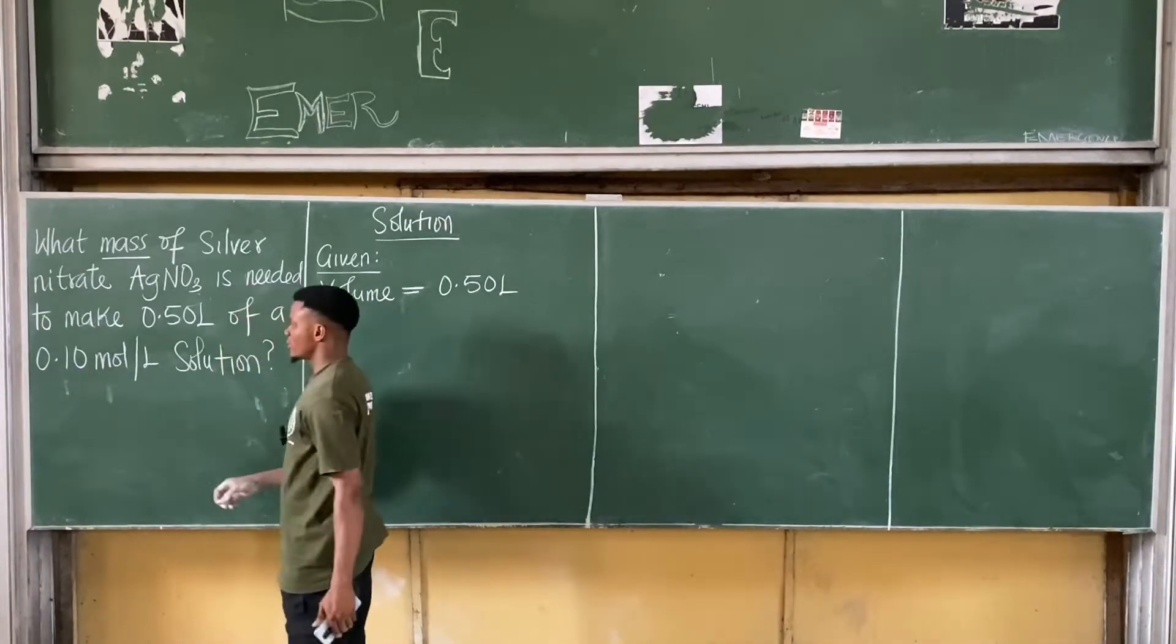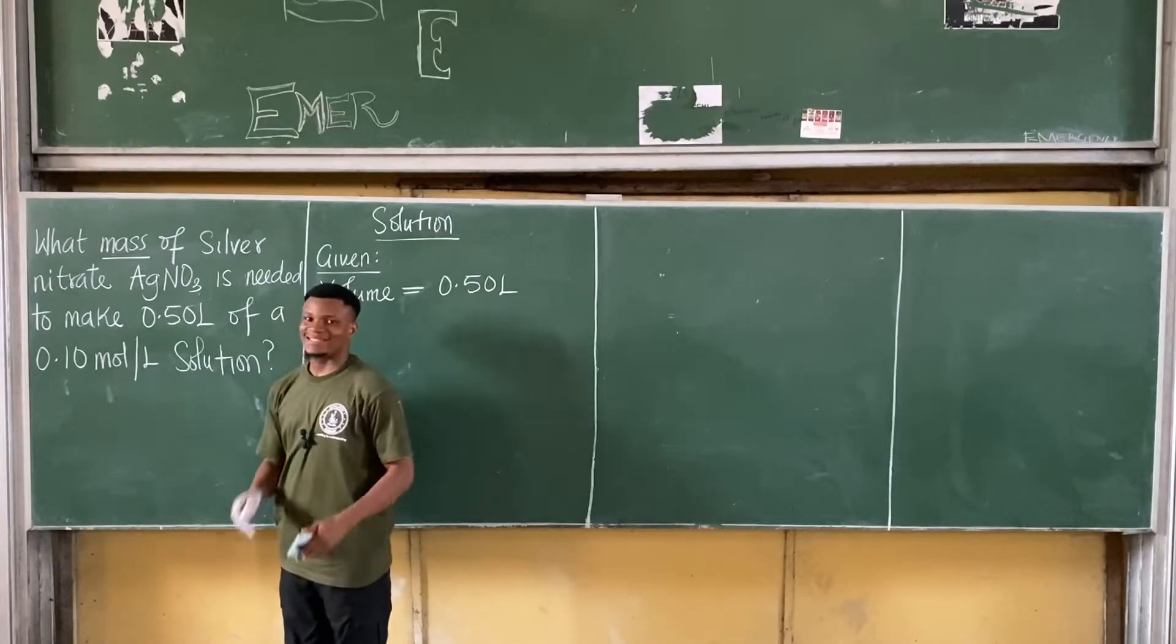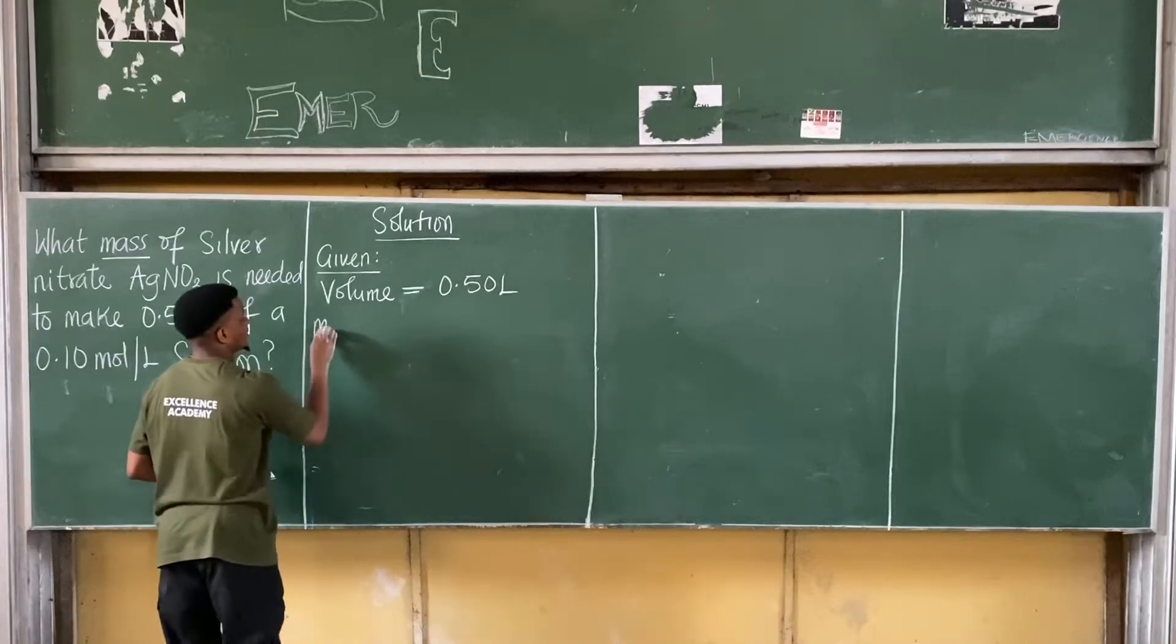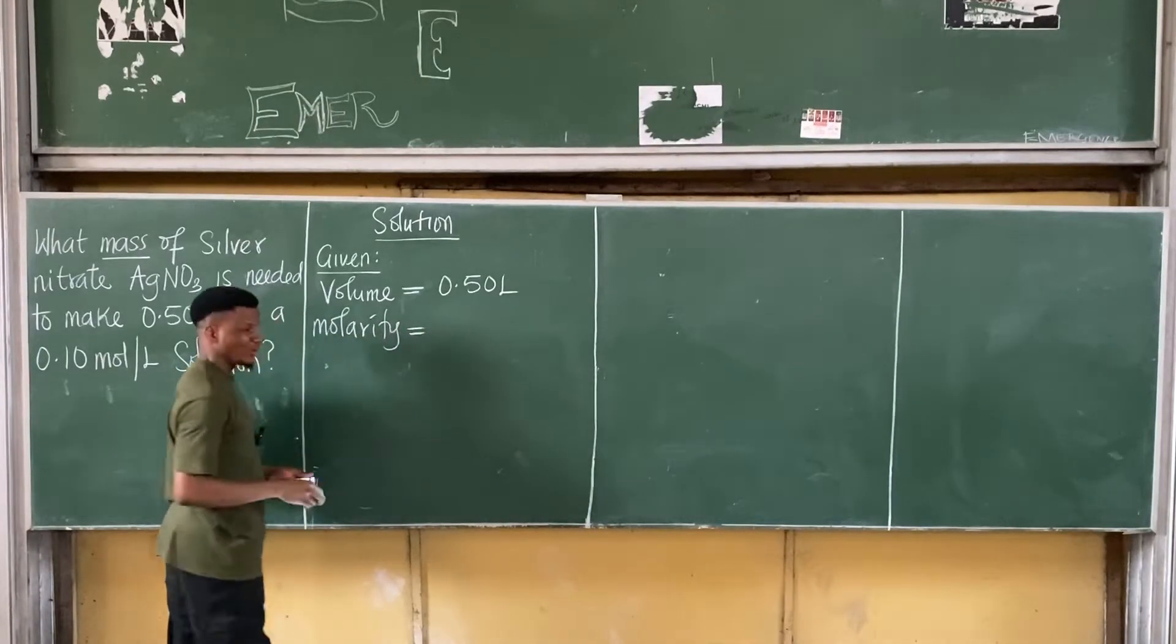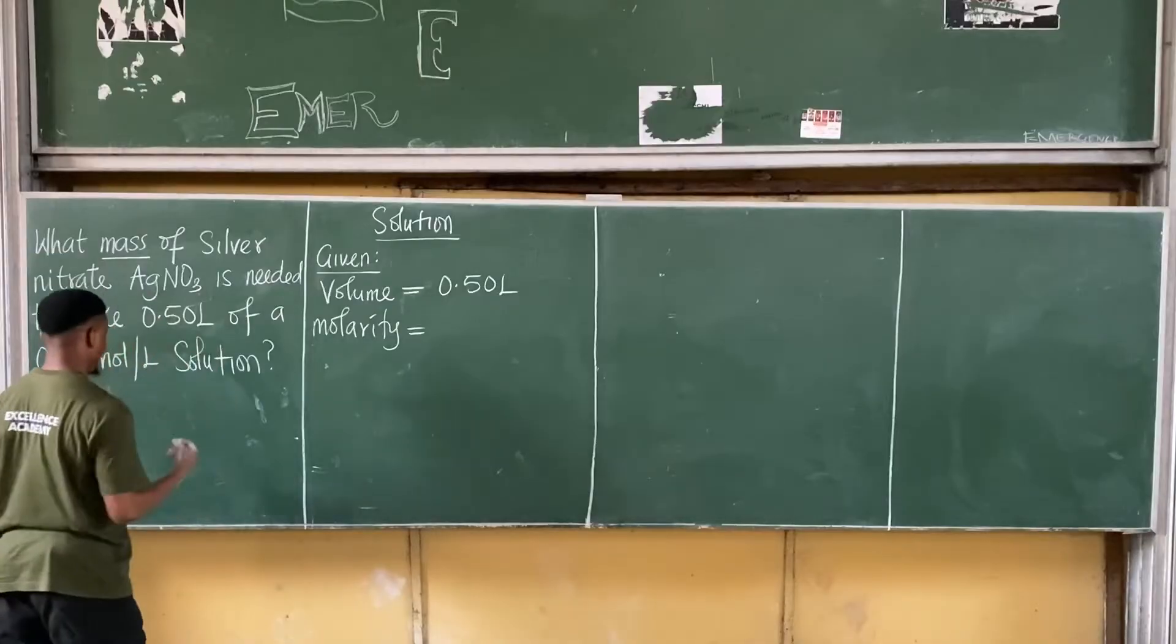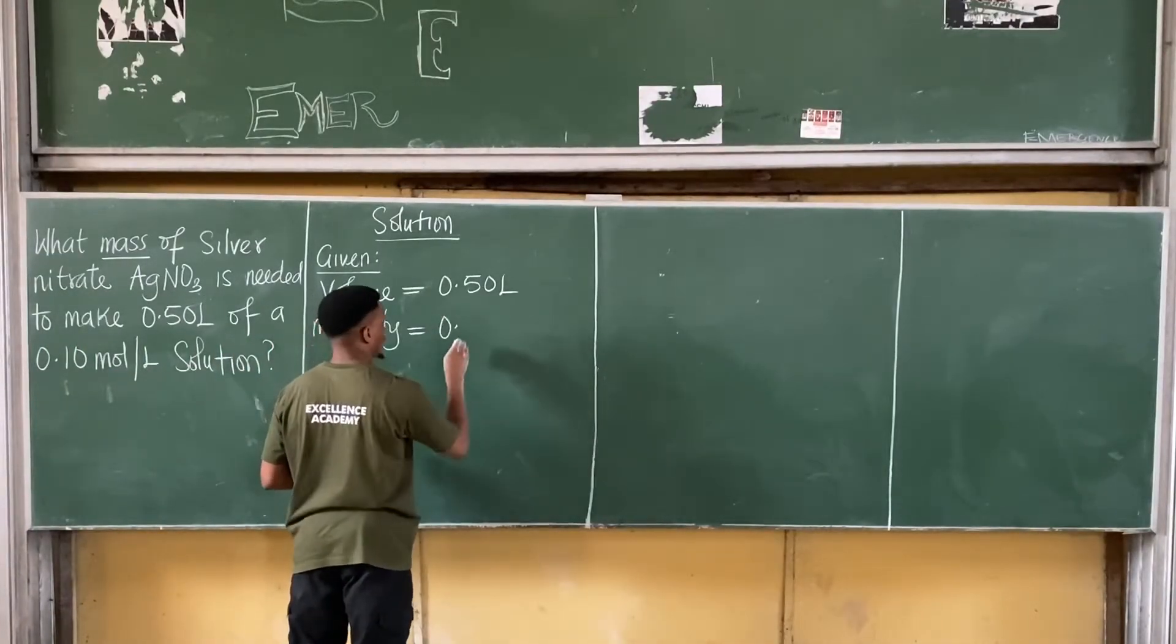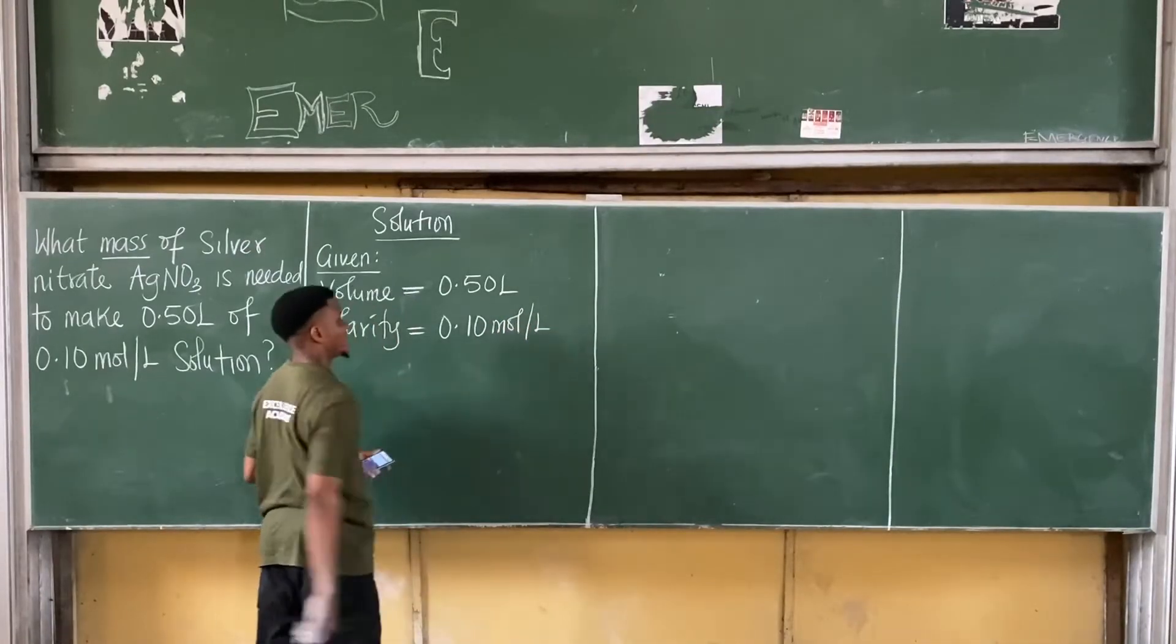Also, I'm given this 0.10 mole per litre. Remember how we said mole per litre is the SI sign for what? Molarity. So I'm given the molarity and we said another name for molarity is molar concentration. So whether they call it molarity or molar concentration, they mean the same thing. The molar concentration here is 0.10 mole per litre.